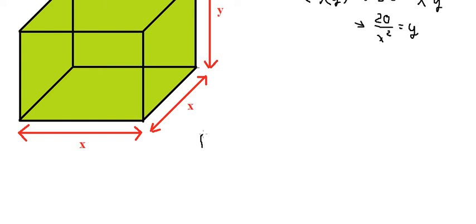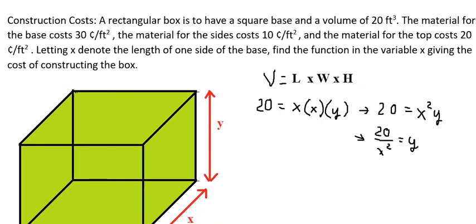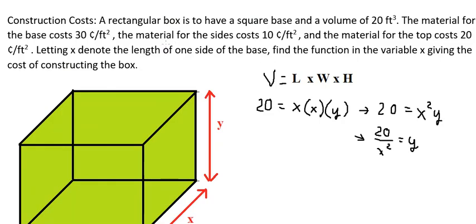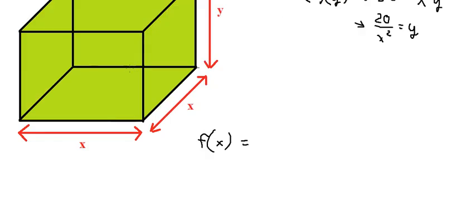This is the first one. Now let's go to the function. This function represents the total cost. We know that the material for the base is 30 cents per square foot.